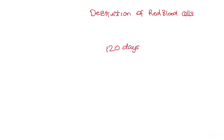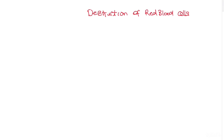As mentioned earlier in iron metabolism, red blood cells are important because they recycle 95% of the iron your body needs. The remaining 5% comes from food, which is about one milligram a day. Now we're going to get into the process of how these red blood cells are broken down.